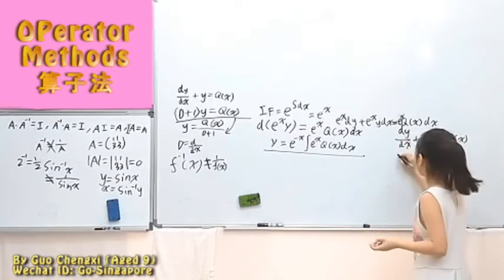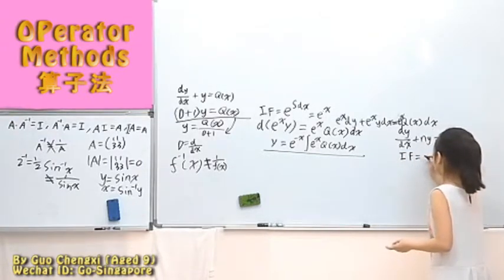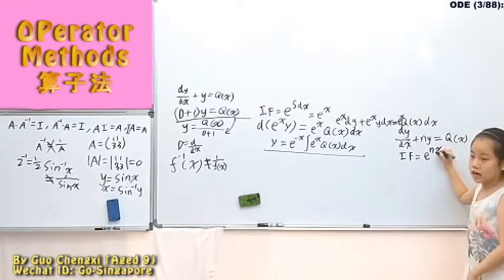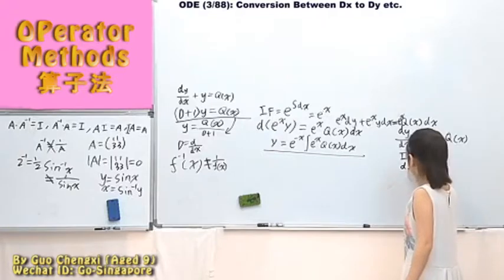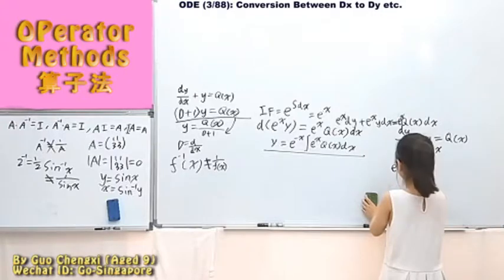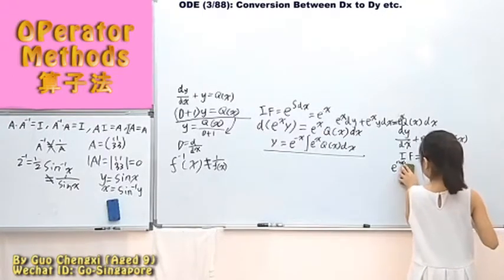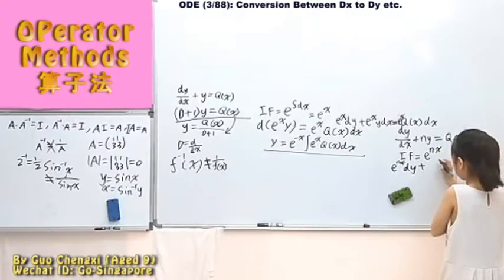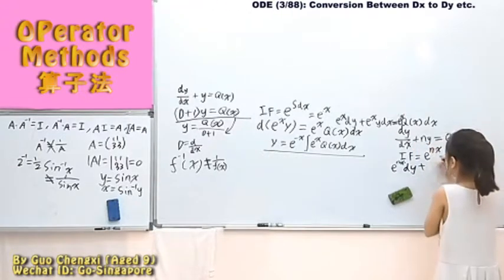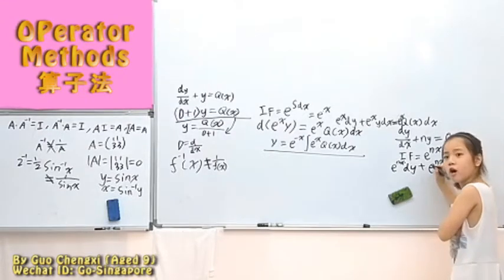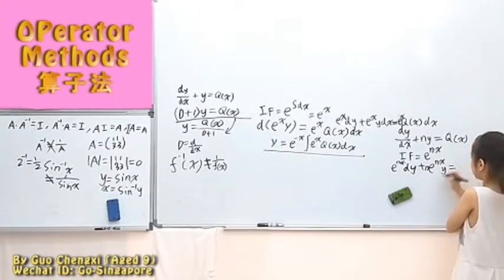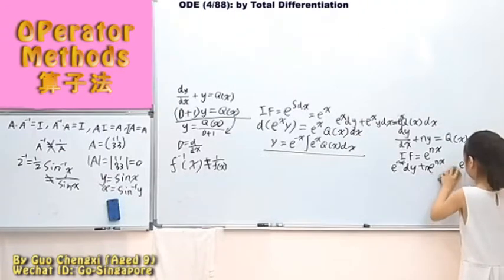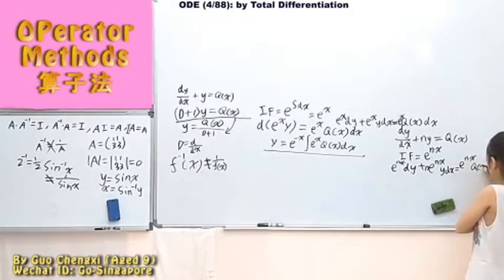Will the same thing happen? If we want to know — instead of it becoming e^x, it becomes e^(nx), since n is a constant. We'll get inside: e to the power of nx dy, plus, for the next part, it becomes e to the power of nx. So it becomes q(x) dx. So simply it becomes like this.